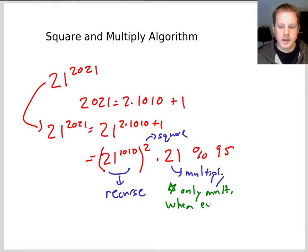And the only additional proviso is that we only multiply when the number was odd. When the exponent is odd.